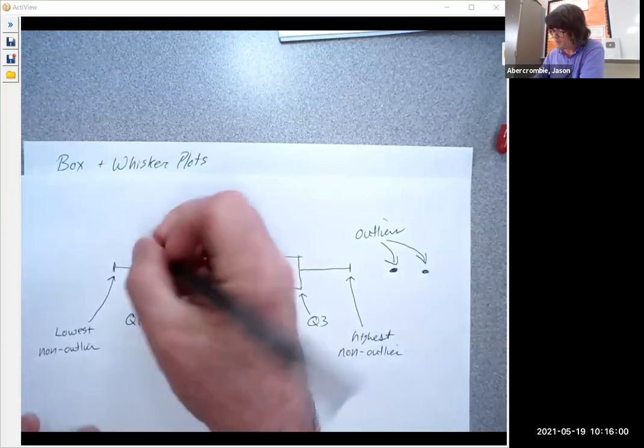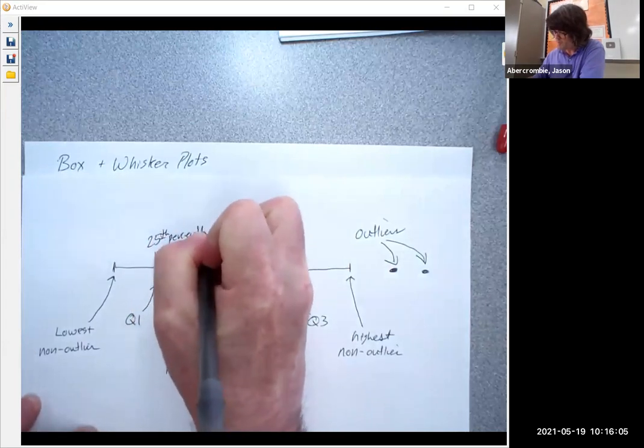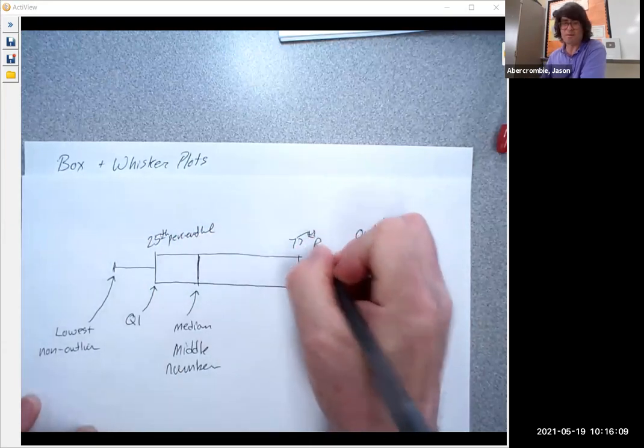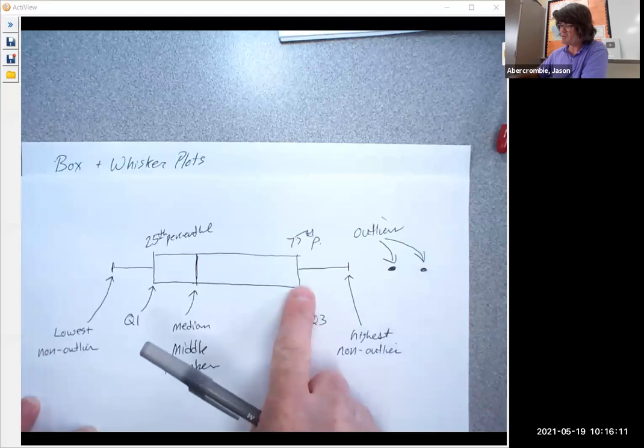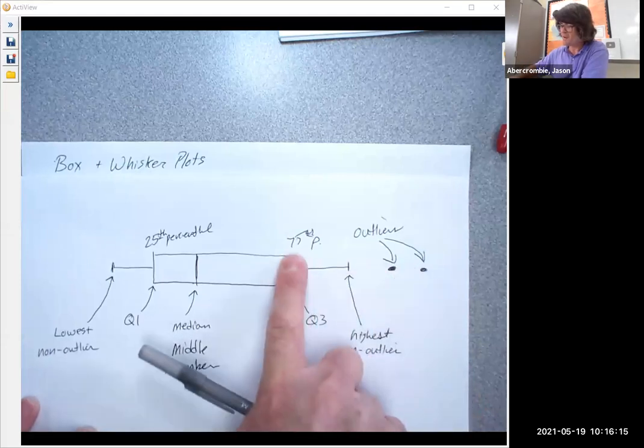The quartile one. This is the 25th percentile. And the quartile three is the 75th percentile. What that means is at the 75th percentile, 25% of the observed values are higher than this number, 75% or lower.